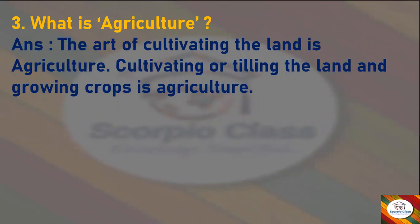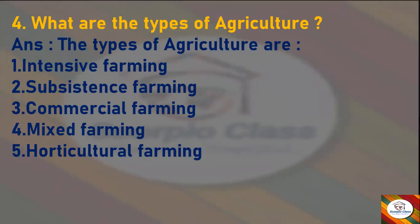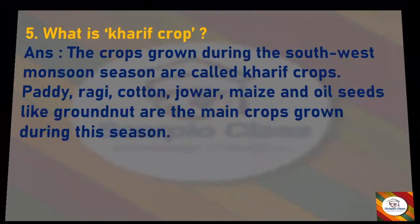Next question: What is agriculture? Answer: The art of cultivating the land is agriculture. You can also write: cultivating or tilling the land and growing crops is agriculture. Next question: What are the types of agriculture? Answer: The types of agriculture are intensive farming, subsistence farming, commercial farming, mixed farming, and horticultural farming.